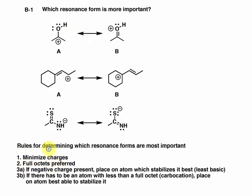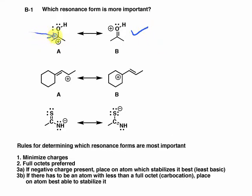Let's look at full octets. Does any atom on A have less than a full octet? We do have a carbocation present — it has only six valence electrons, whereas the oxygen has eight. On the right-hand side in B, both the oxygen and the carbon have eight valence electrons. So full octets being preferred, resonance form B should be favored over A, since A has a carbon with less than a full octet. B is the preferred resonance form.